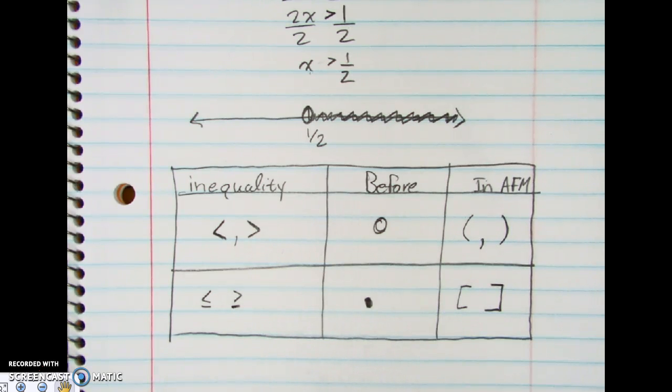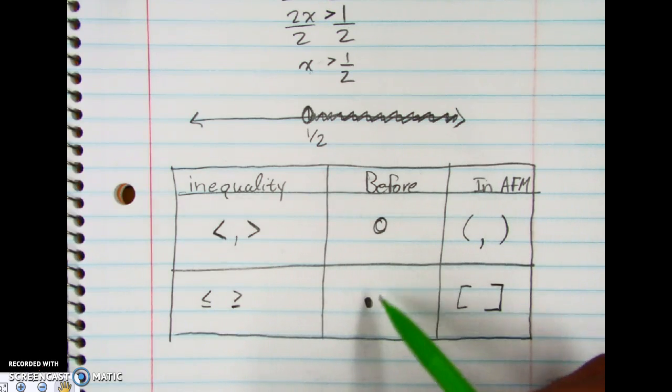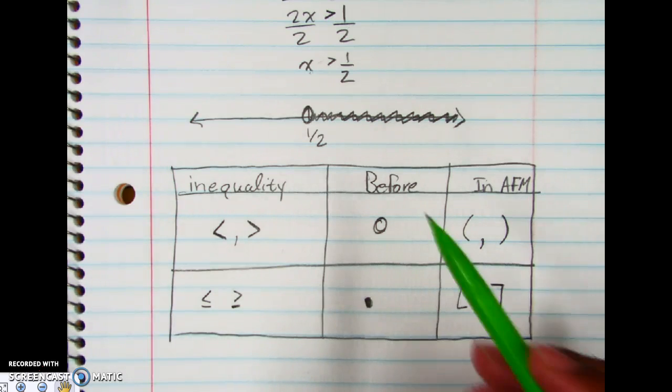So from now on, whenever we start doing these problems, you can no longer use what we do here, open and closed circles. They will automatically be wrong. Even if the shading is correct and everything of that sort, it's automatically wrong. So we're going to be using parentheses and brackets.